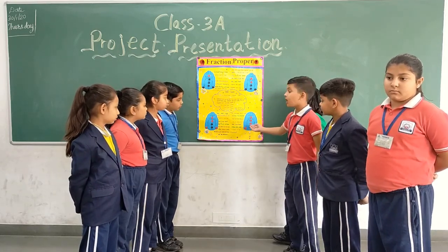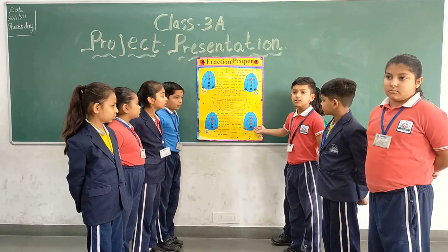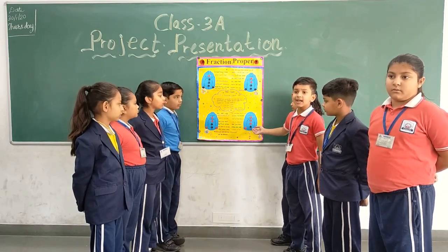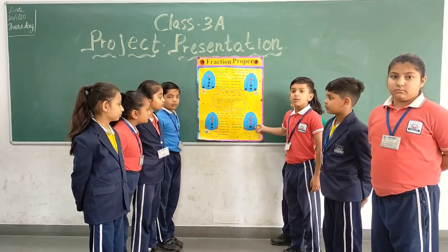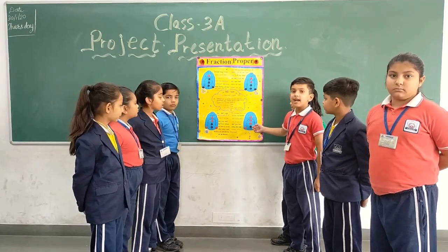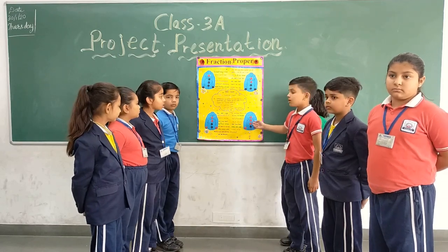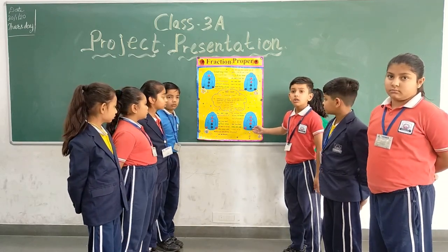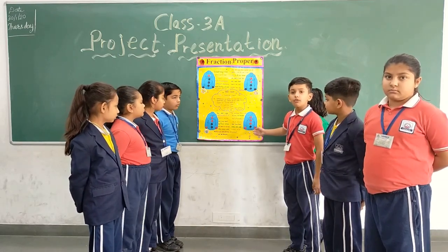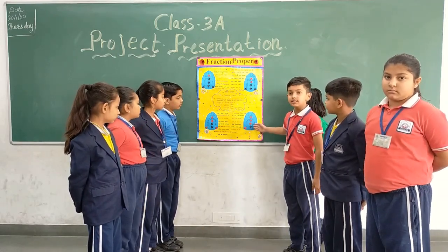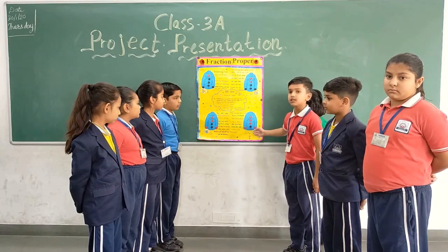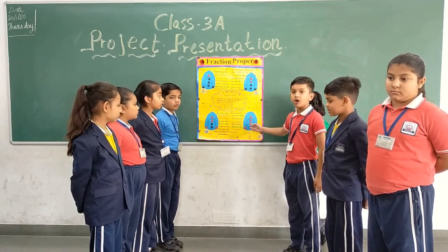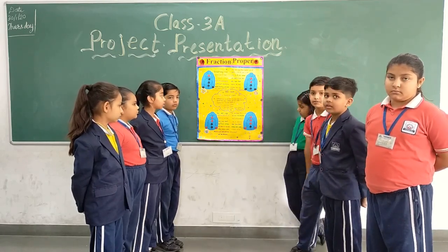In the next shirt, total buttons are six and five are red. So we can say 5/6 buttons are red on this shirt.